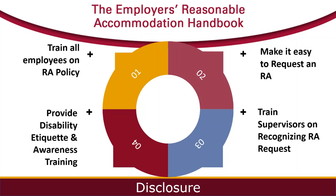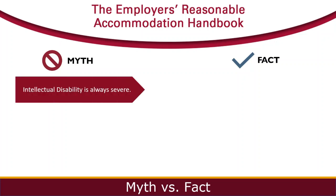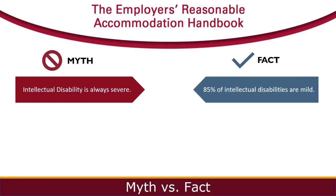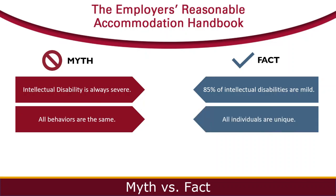Stereotypes and fears some people have about certain types of disabilities can also impact them in the hiring process. Often, the biggest barrier to employment for an individual with a disability is not a limitation they have, but the limiting beliefs and opinions others have about the person's disability. One myth is that an intellectual disability is almost always severe. The fact is 85% of individuals with an intellectual disability have mild intellectual impairment, which does not limit getting an education or performing a job. Another belief is that people with an intellectual disability all behave in the same way. In fact, people with and without disabilities are unique individuals with their own abilities, limitations, preferences, dislikes, hopes, and goals, so all of us behave in our own unique way.